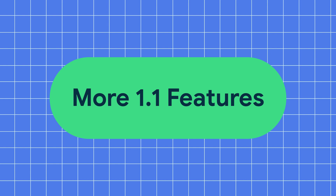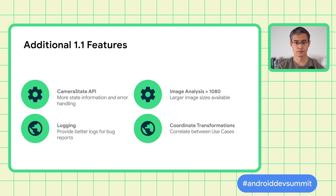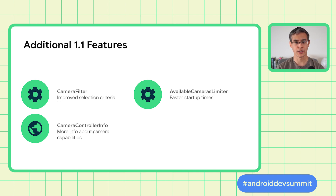We've just covered some of the new features in 1.1. There are additional features to be aware of. The camera state API now provides more information about the camera state and allows apps to design better UI and UX flows around different camera events, such as when another app is using a camera or do not disturb is enabled. Image analysis can now provide sizes larger than 1080p. A logging API provides detailed logs for debugging and better bug reports. Coordinates can be correlated between use cases using the coordinate transformation API — if you locate points of interest in an image analysis buffer, this lets you easily find those same coordinates in the image capture output or preview. A camera filter API lets you write a method to select a specific camera based on detailed criteria. The available cameras limiter allows for faster startup times if your app only needs a front or back camera.